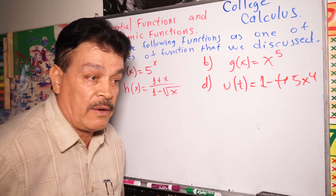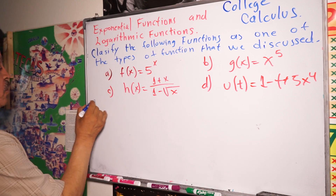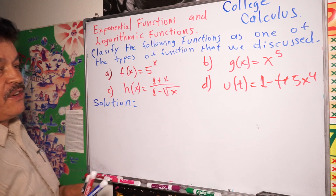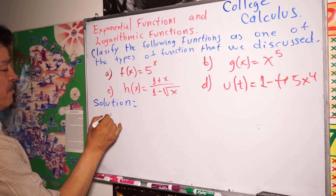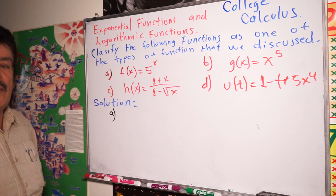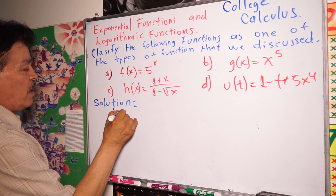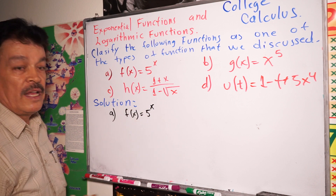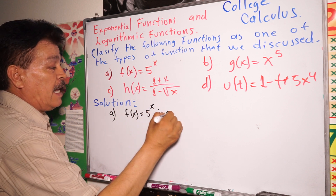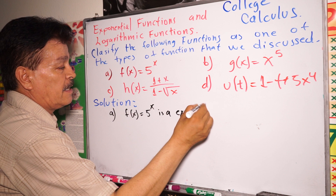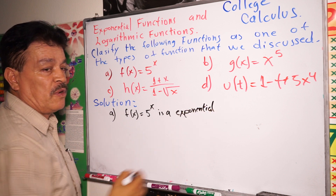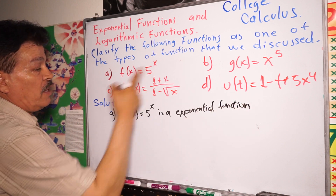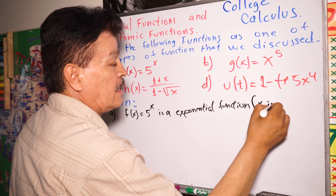Alright, let's write the solutions. For part a: f(x) equals 5 to the x power. This is an exponential function because x is the exponent.